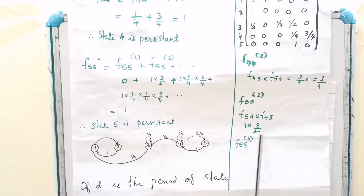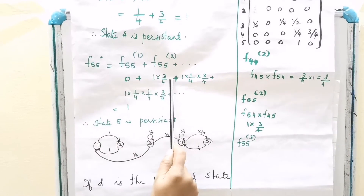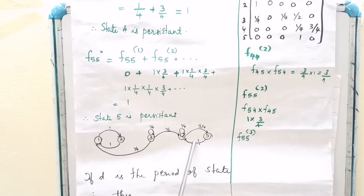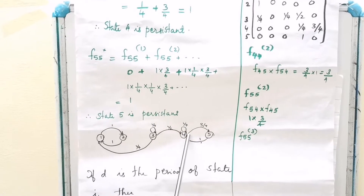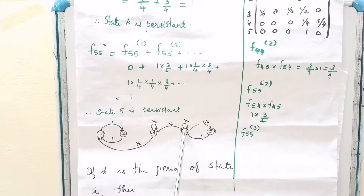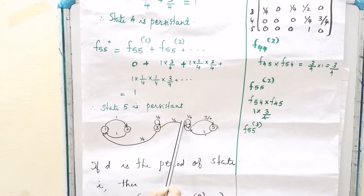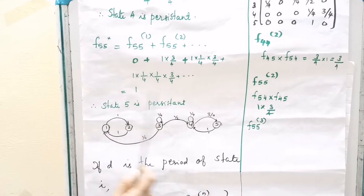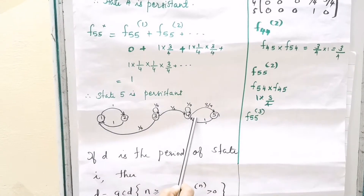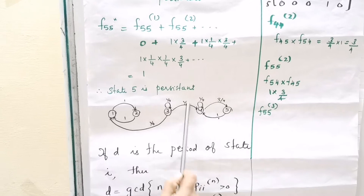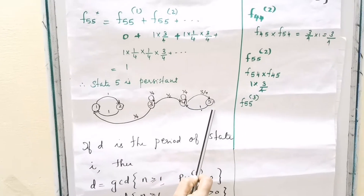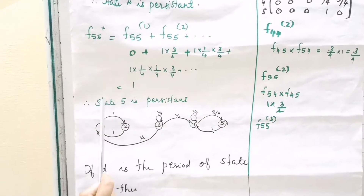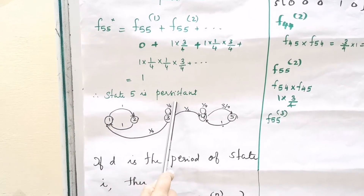F552: 5 to 4 then 4 to 5 — that is 1 into 3/4. F553: 5 to 4, 4 to 4, then 4 to 5 — that is 1 into 1/4 into 3/4. F554: 1 into 1/4 into 1/4 into 3/4, and so on. Summing these up, F55* equals 1. So state 5 is persistent.